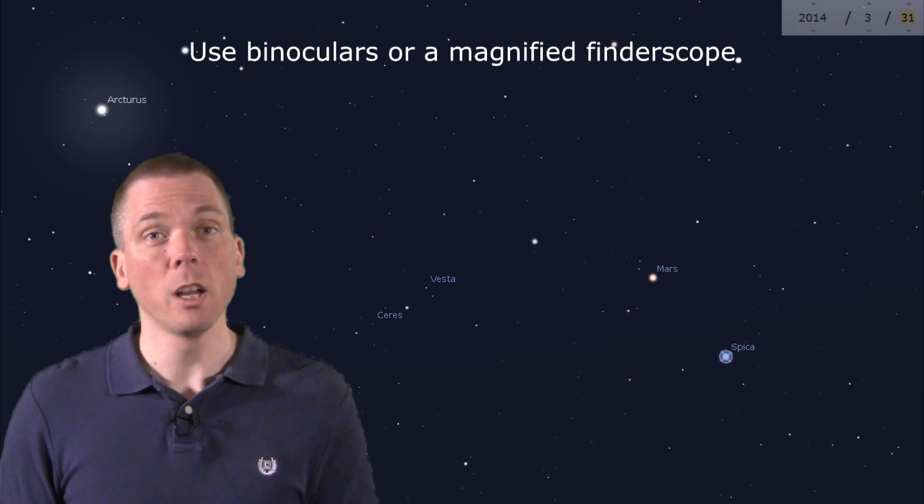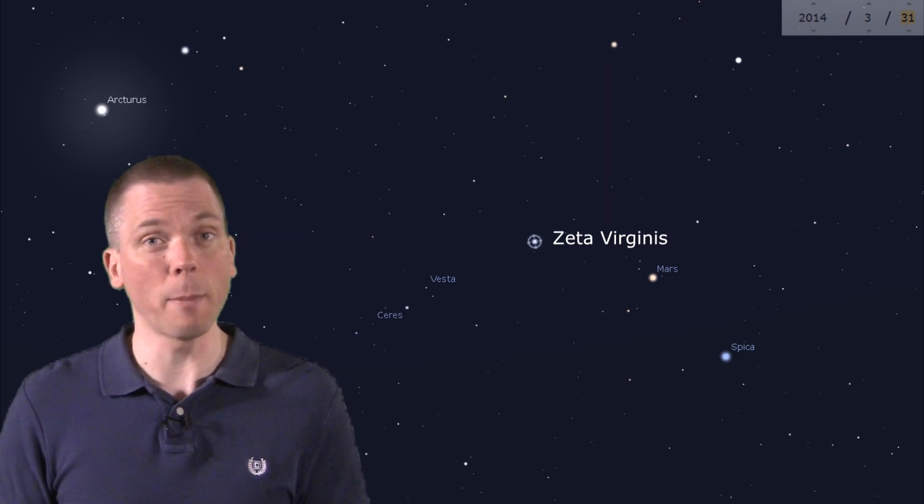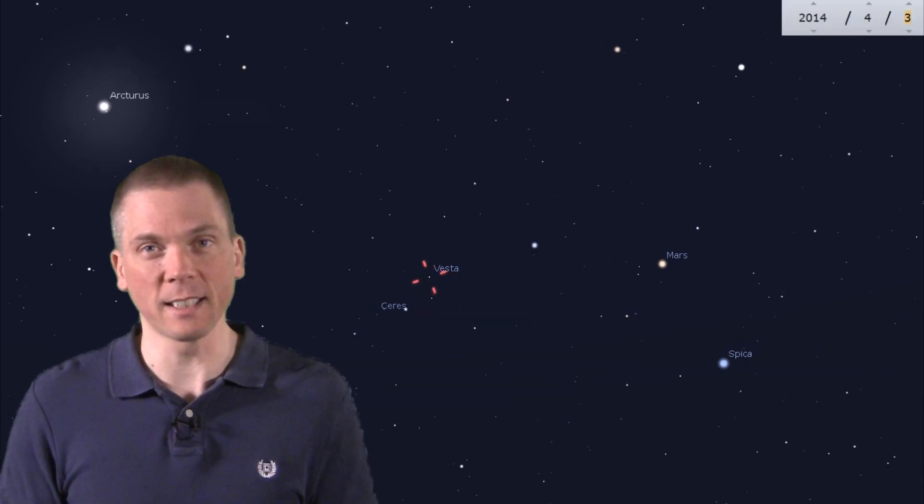Start at Spica, go up to Mars, and beyond to this star, Zeta Virginis. Then turn about 120 degrees in this direction, and follow that line to the fourth magnitude Tau Virginis. All week long, Vesta will be moving away from this star, having skirted within three-quarters of a degree of it on March 26th.